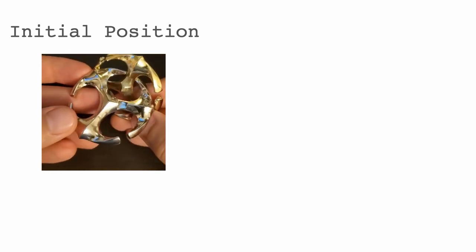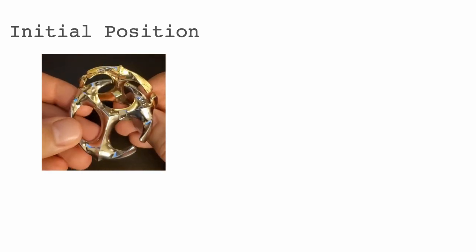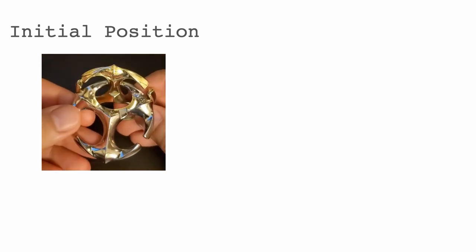For example, we can talk about the initial position. We first move it to this state, and now we can identify it: this is chamber A, arm is c, the face is looking outward, and the direction is up. So this is A C O U.